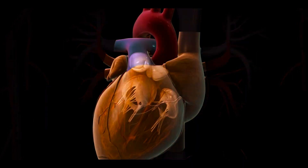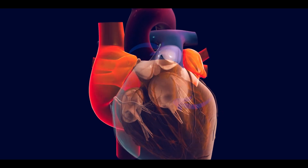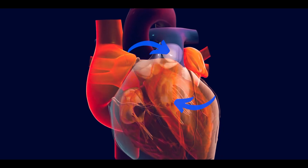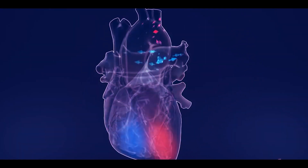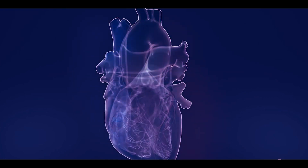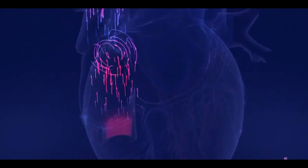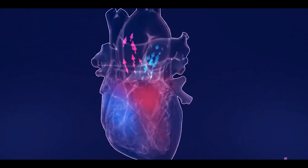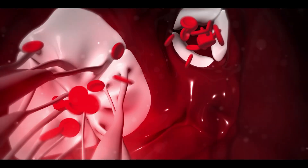Our heart has a total of four valves: the tricuspid and pulmonary valves on the right side, and the mitral and aortic valves on the left side of the heart. Valves on the right side control the movement of deoxygenated blood coming from body cells into the heart and from the heart to the lungs. Valves on the left side control the movement of oxygen-rich blood coming from the lungs into the heart and from the heart to body cells. These four valves basically prevent the mixing of blood moving in the four chambers, or compartments, of the heart.